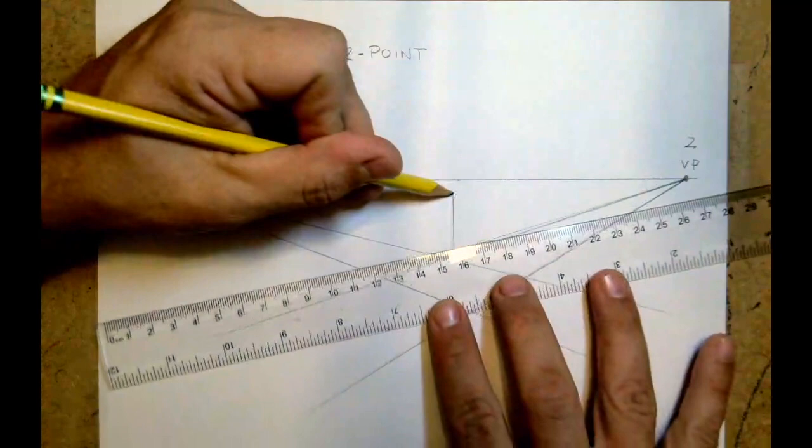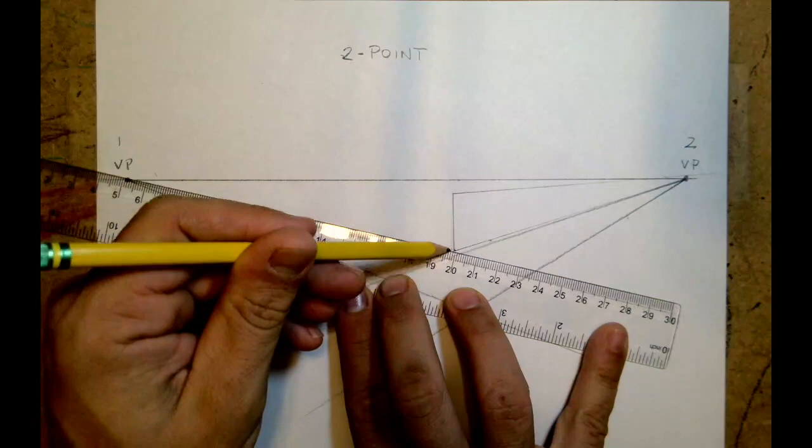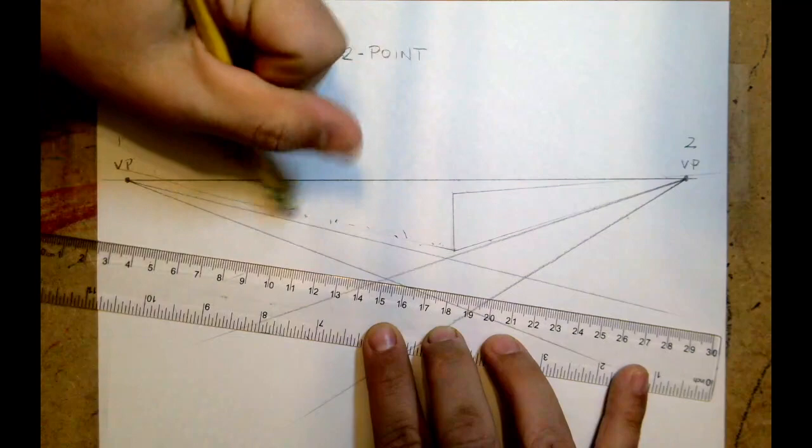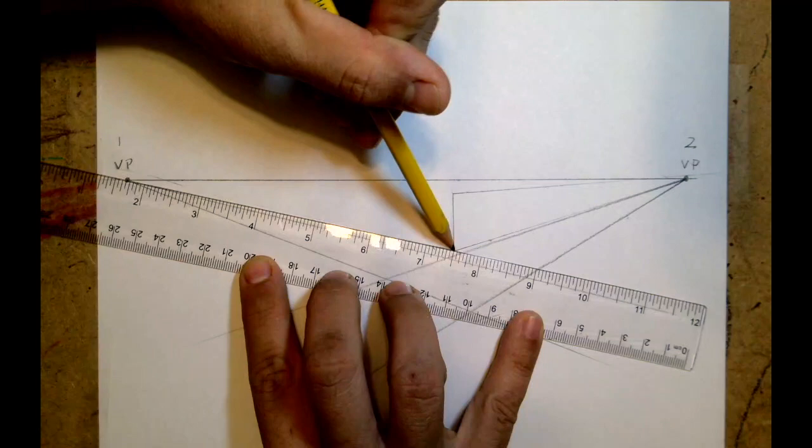I'll then take the top and the bottom of the line and draw that back with a light convergence line that goes back to the vanishing point on either side. Let me just clean that up right there. Try that again. Again, I want to hit the vanishing point against the bottom and top of my vertical line I created.